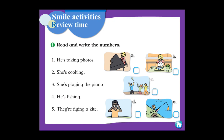Number three: she is playing the piano. She is playing the piano. Look at the picture — number eight. Right, number three there. Number four: he is fishing. He is fishing. Try to find it — that's good. Right there, number four. Number five: they are flying a kite. They are flying a kite — number C. Right. Let's go to the next one.